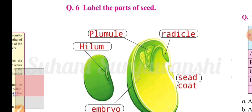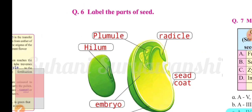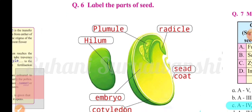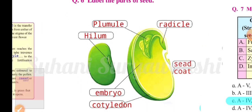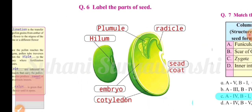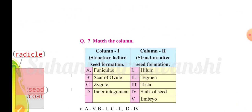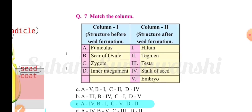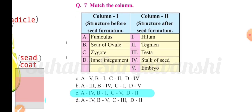Question six: label the parts of the seed. The parts are radicle, seed coat, embryo, cotyledon, plumule, and hilum.